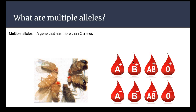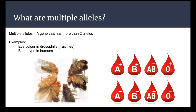So rather than being like blue eye versus brown eye, there are actually multiple different things. The two examples of multiple alleles we're going to look at in great detail in this chapter are fruit fly eyes — they have four different colors — and blood type in humans, because you can have type A, type B, type AB, or type O.